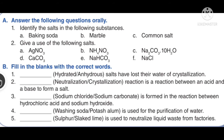Na2CO3·10H2O is sodium carbonate and is used in detergents. NaCl (sodium chloride) is used as a seasoning of food. NaHCO3 is used in bakery. CaCO3 (calcium carbonate) is used to make lime. Fill in the blanks: anhydrous salts have lost their water of crystallization.